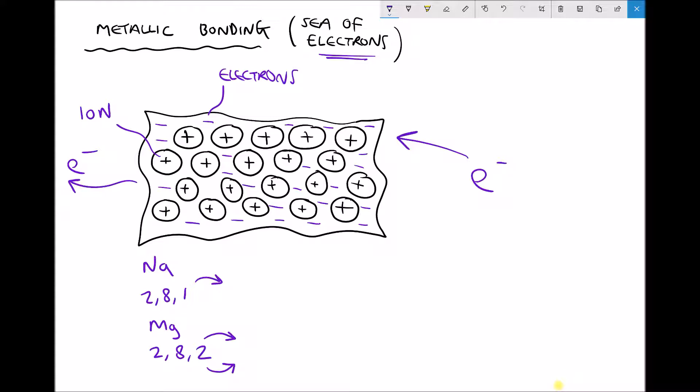One other thing that's worth mentioning is that when we look at some of our transition metals, let's take copper as an example. Copper has the electron configuration 2,8,18,1.